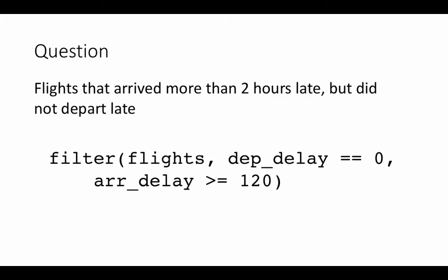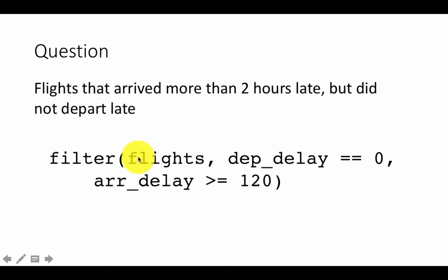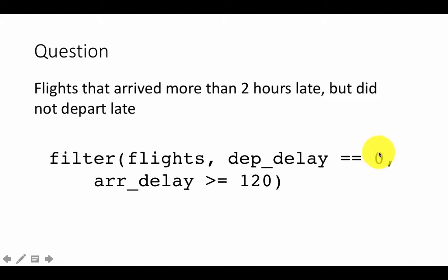For flights that arrived more than two hours late but did not depart late — that is, departure delay is zero but arrival delay is more than 120 minutes — we use filter(flights, dep_delay == 0, arr_delay > 120). Putting a comma implicitly means AND. Alternatively, you could use an ampersand to write the same condition.